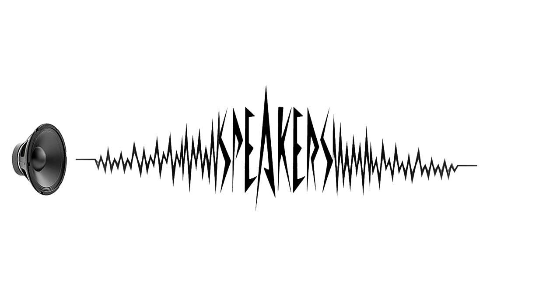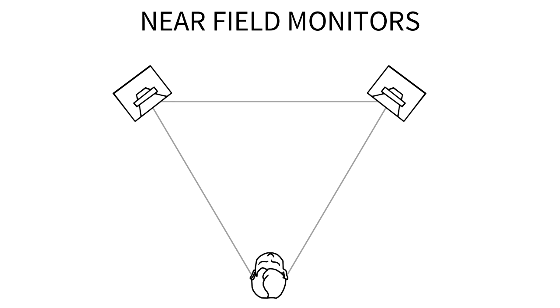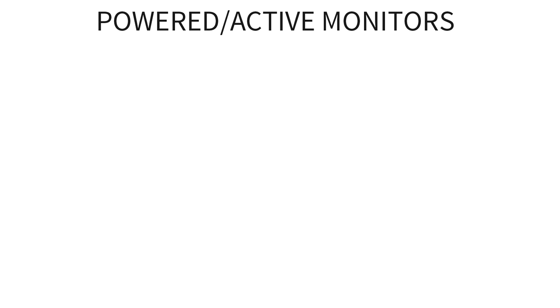Now we need some speakers to play back our recording so we can hear what's going on. You want what we call monitor speakers, which are studio speakers designed to have as flat a frequency response as possible. That way you get a clear picture of what's going on in your mix without the speakers emphasizing certain frequencies and de-emphasizing others. You'll want near-field monitors, which sit near you. And since I'm outlining the most efficient, simplest setup, get powered monitors, because then you don't need to worry about an amplifier.